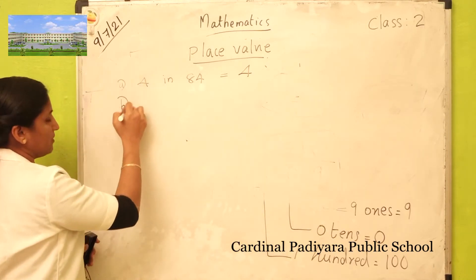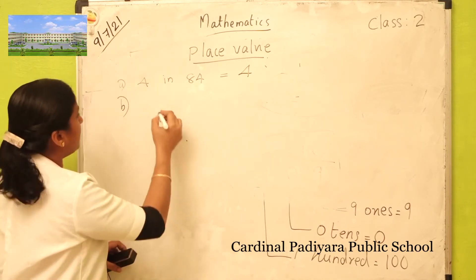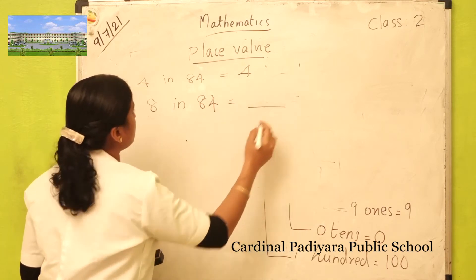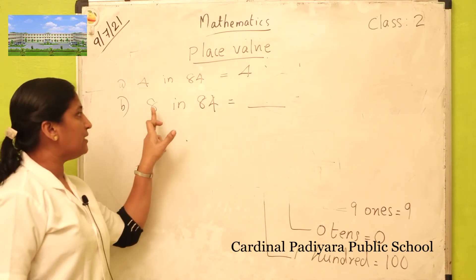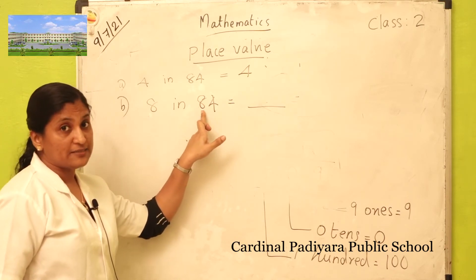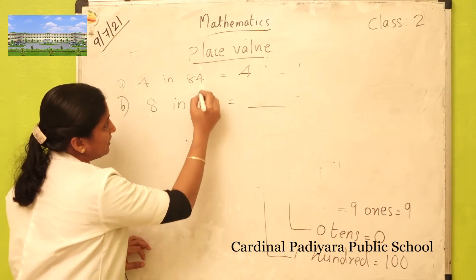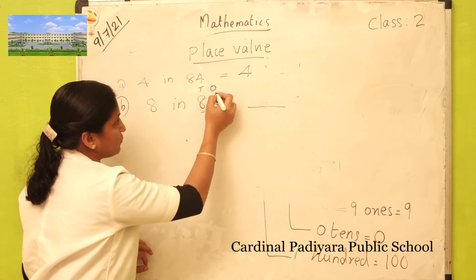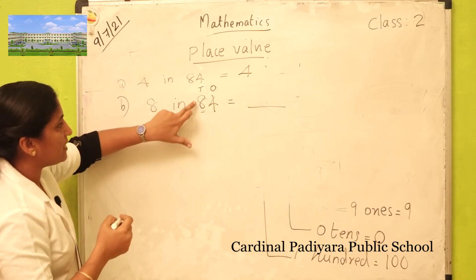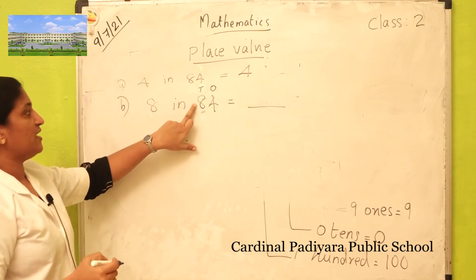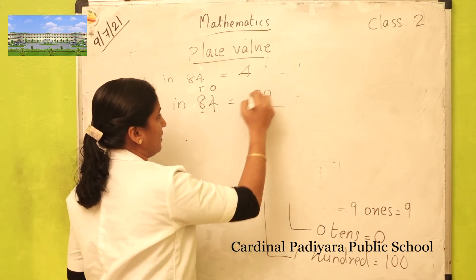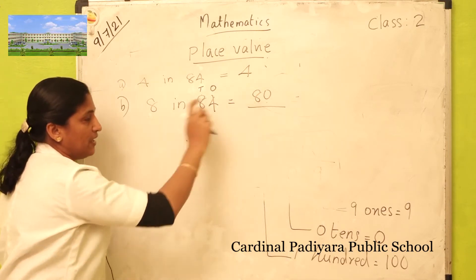Question number B: eight in 84. What is the place value of eight in 84? Eight is in tens place. How many tens? Eight tens. Eight tens is eighty. So the value of eight is eighty.